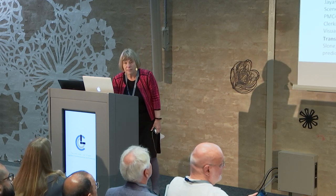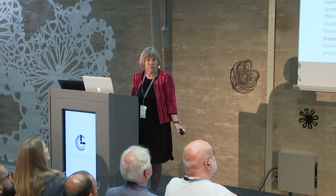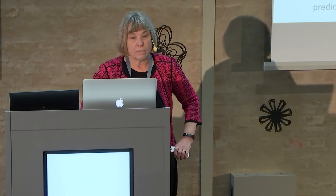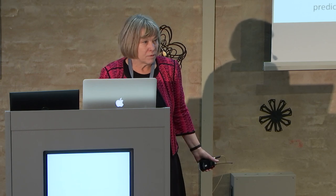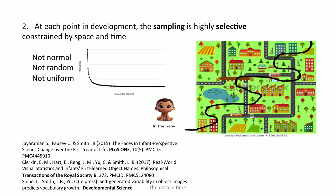At each point in development, the sampling is also highly selective — nothing at all like the experiments anybody runs on learning. The sampling is not normally distributed. It is not a random sample of the world. It is highly selective, because when our little baby is six months old and hanging out near those trees, he sees a lot of those trees nearby. What this ends up with are distributions that are highly skewed — very few individual things are sampled very, very frequently, and almost everything else is sampled occasionally but rarely. Everything is a right-skewed distribution.